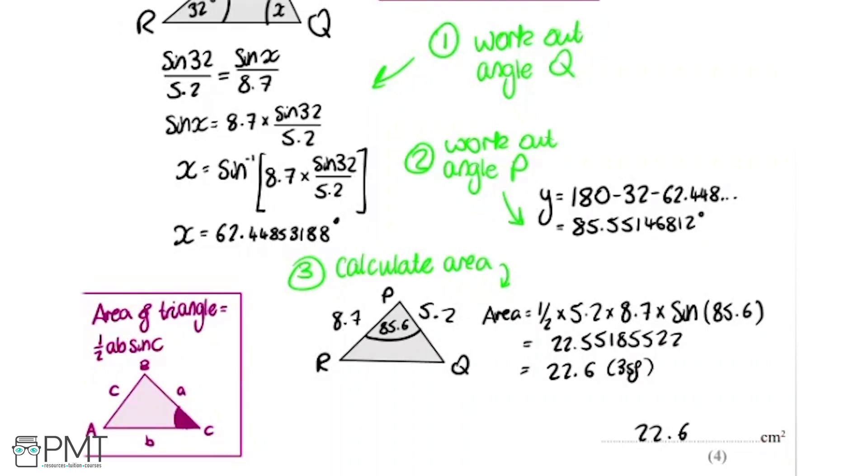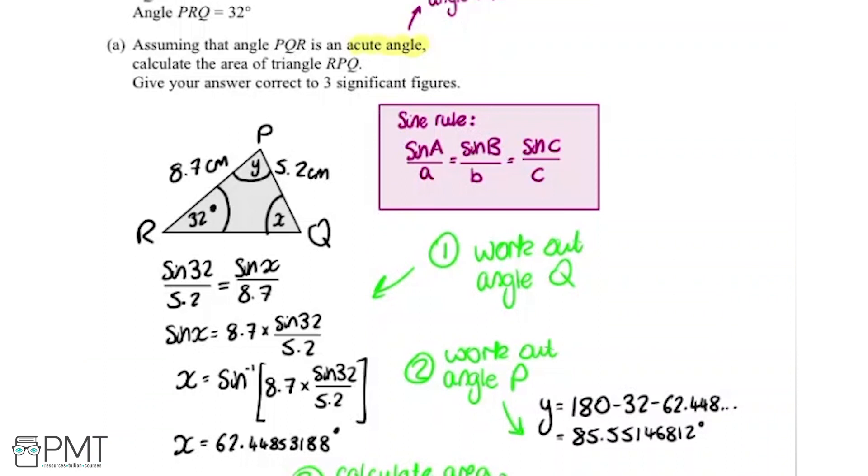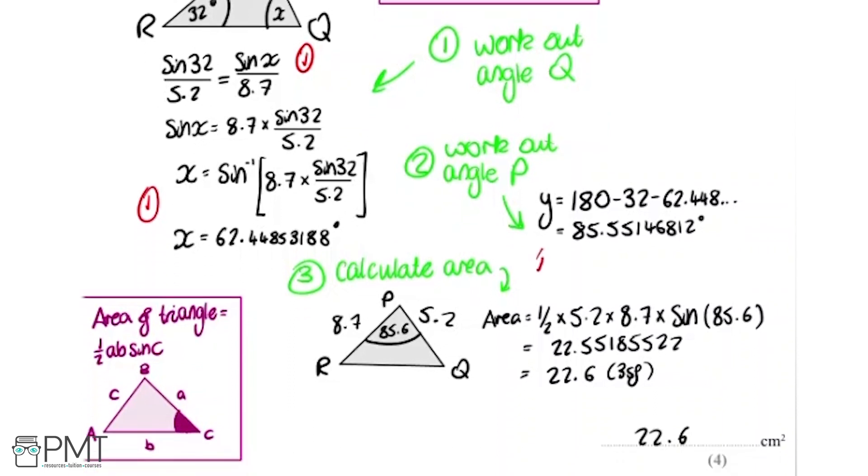Looking to see where we get the marks for part A. We get the first mark for starting the process of labeling the triangle, drawing it out like this, and realizing we can use the sine rule. We get the second mark for doing this bit of working, so rearranging so we get x equals sine inverse of this. We get the third mark then for going through this process down to here to calculate the area. We get the fourth mark for the correct area to three significant figures.